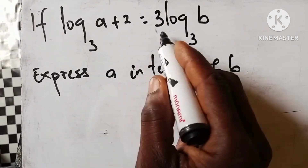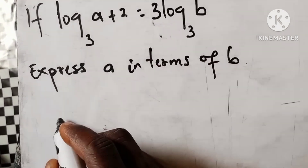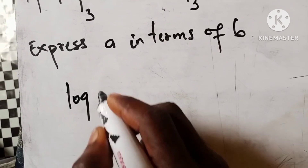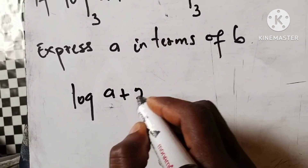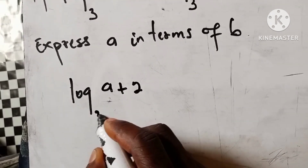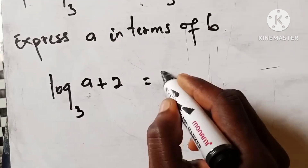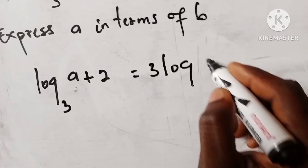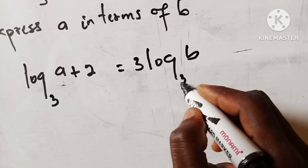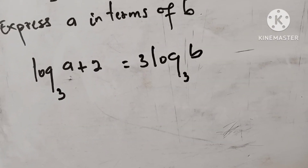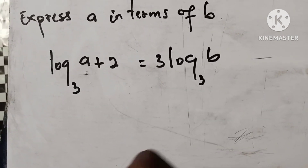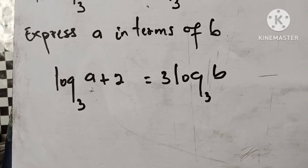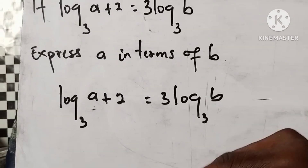Our starting point is the equation given: log of (a plus 2) base 3 is equal to 3·log(B) base 3. If you want to know the real meaning of logarithm, check our playlist down below — it is very simple to understand.